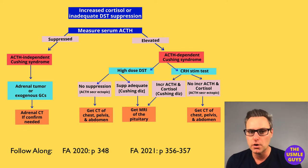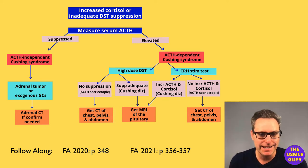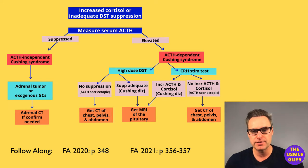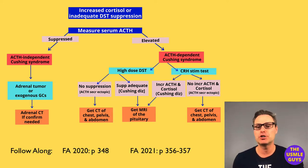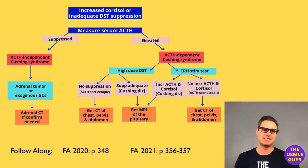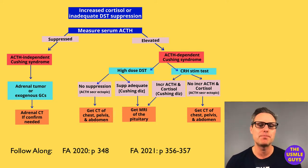If we can confirm glucocorticoid use, we know the problem and can fix it. If there's no glucocorticoid use, we confirm the presence of an adrenal lesion with a CT. If serum ACTH is elevated, this is ACTH-dependent Cushing syndrome, and we'll do either the high-dose dexamethasone suppression test or the CRH stimulation test. Please don't forget — the high-dose dexamethasone suppression test is not really used in ACTH-independent Cushing syndrome, only in ACTH-dependent.